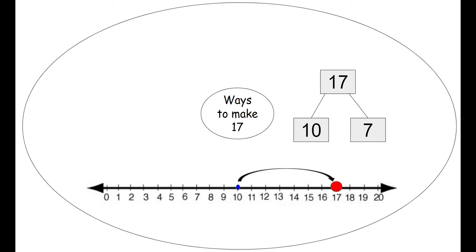And then we decompose the number 17 with 10 and 7. We can also use our number line to make the number 17. So we start on 10 and then we jump 7 times. So we jump once to 11, 12, to 13, to 14, to 15, to 16. And then finally for the 7th time to number 17. Our red dot number 17.